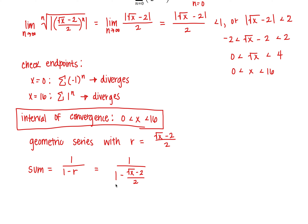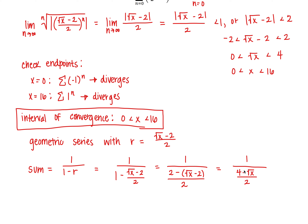I'm going to turn that first 1 into 2 over 2. So in the denominator we have 2 minus the square root of x minus 2, all over 2. The negative turns the minus 2 to a positive, giving 1 over the quantity 4 minus the square root of x, over 2. Taking the reciprocal, the sum is 2 over 4 minus the square root of x.